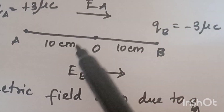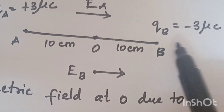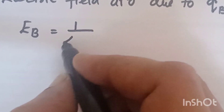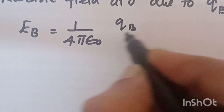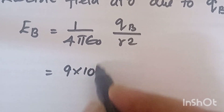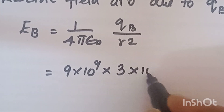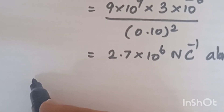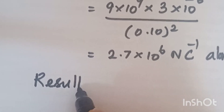Now we will calculate the field at O due to QB. That is: 9 into 10 power 9 into 3 into 10 power minus 6, divided by 0.10 whole square, which gives 2.7 into 10 power 6 newton per coulomb.